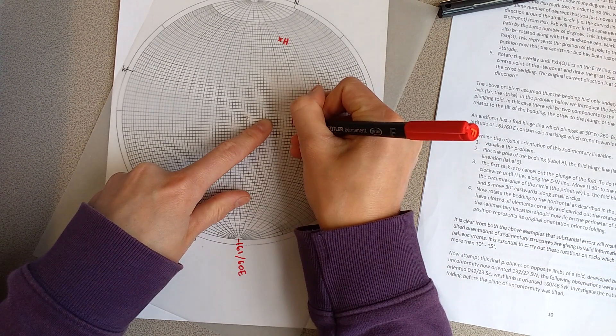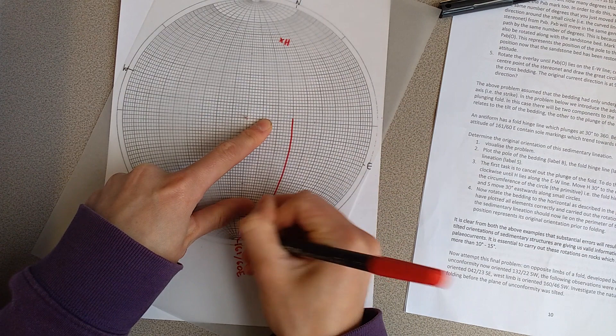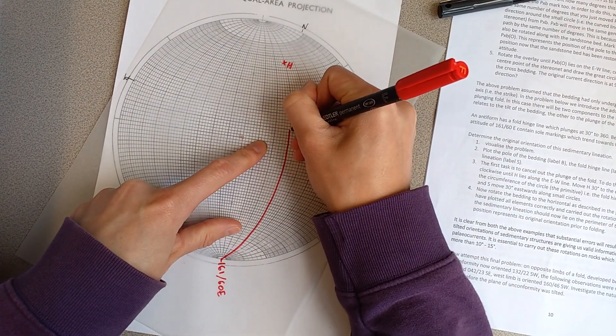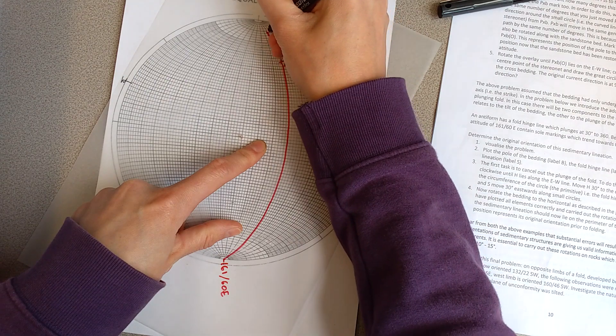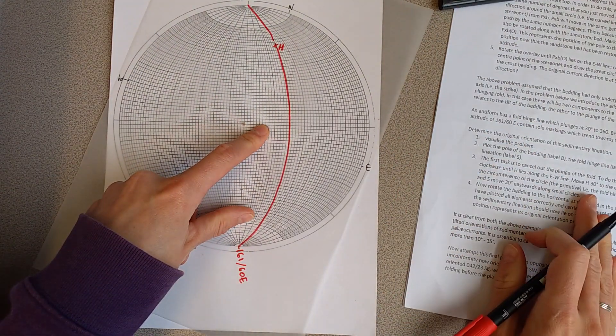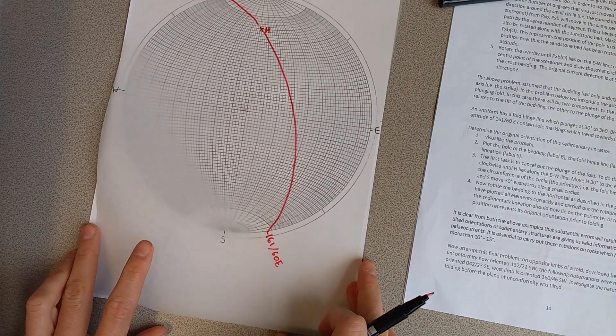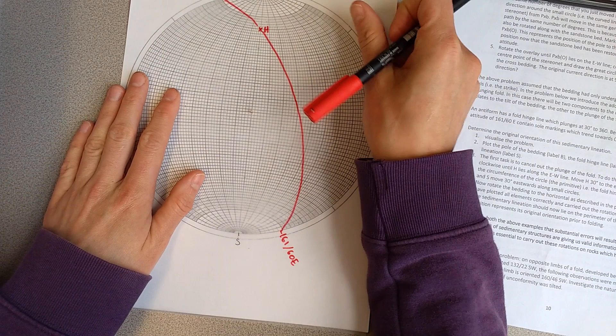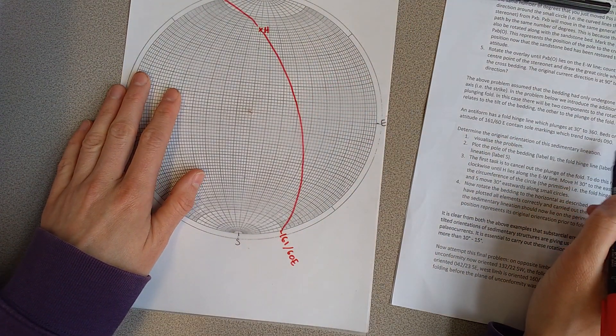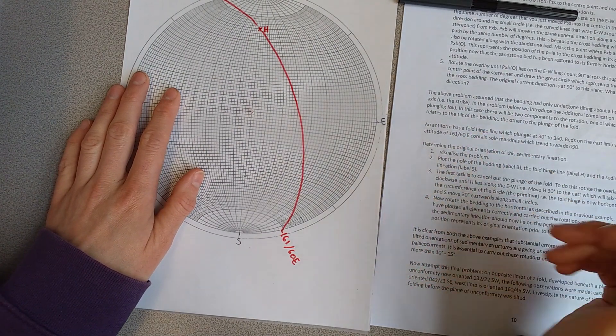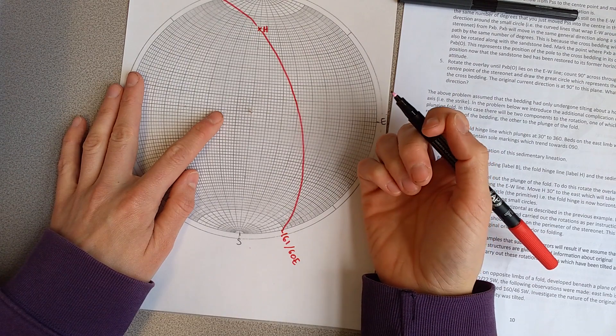And then I'm going to draw the great circle, and this represents the eastern limb. And that eastern limb, so if I rotate this back, it's said to contain sole markings which trend towards 090. And this is them trending towards 090 whilst it is still folded and plunging.